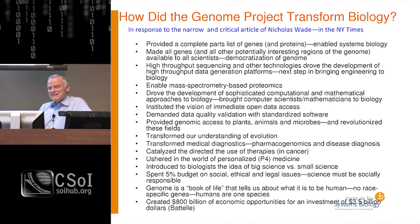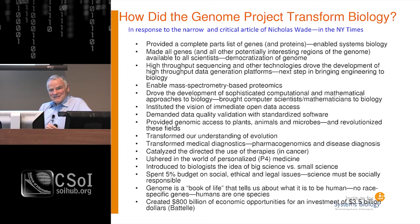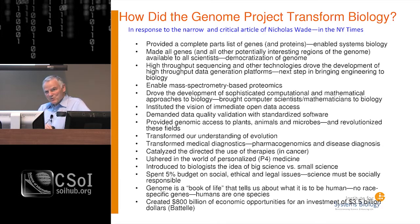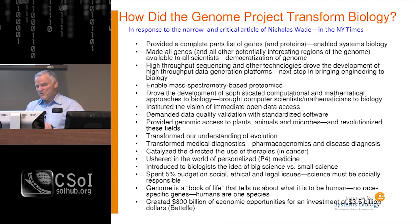Phil Green at the University of Washington wrote standardized software for data quality. The Genome Project transformed our view of evolution, gave us access to genomes of microbes, plants, and animals, and transformed many aspects of medicine. One of the most interesting things it did is teach us there are no race-specific genes — in a sense, we are all one race, and if there are fundamental differences among the races, they're environmental and not genetic. Battelle did a study showing the genome generated more than $800 billion in economic opportunities from an investment of $3.5 billion.